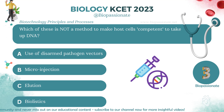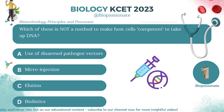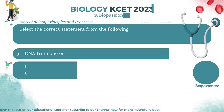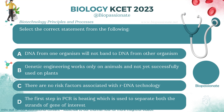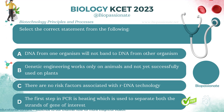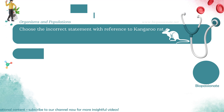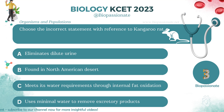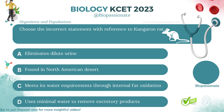Select the correct statement from the following. Answer: Option D. Choose the incorrect statement with reference to kangaroo rat. Answer: It eliminates dilute urine.